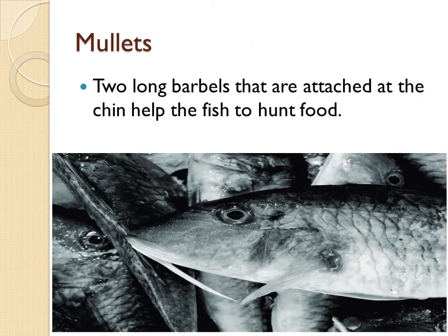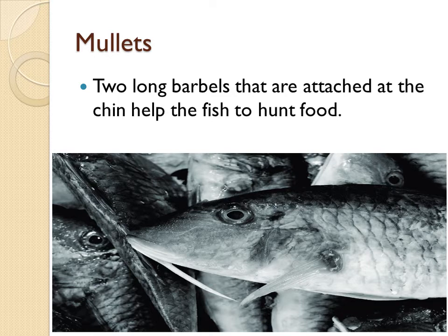In this slide you can see the image of a mullet fish. It possesses two long barbels attached at the chin which help the fish to hunt food. Scientists say that it relies exclusively on its chin barbels for feeding. The mullets belong to the family of ray-finned fish found worldwide in coastal temperate and tropical waters, and some species in fresh water. This family includes about 78 species in 20 genera, and mullets have served as an important source of food in Mediterranean Europe since Roman times.